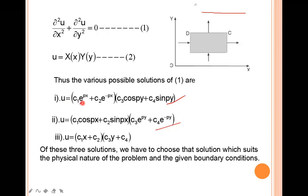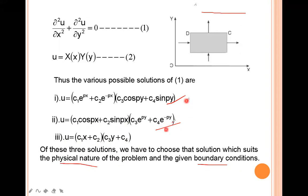The three solutions are: u = (c₁e^(px) + c₂e^(-px))(c₃cos(py) + c₄sin(py)); u = (c₁cos(px) + c₂sin(px))(c₃e^(py) + c₄e^(-py)); and u = (c₁x + c₂)(c₃y + c₄). Based on the physical nature and boundary conditions, we use any one of these three solutions.